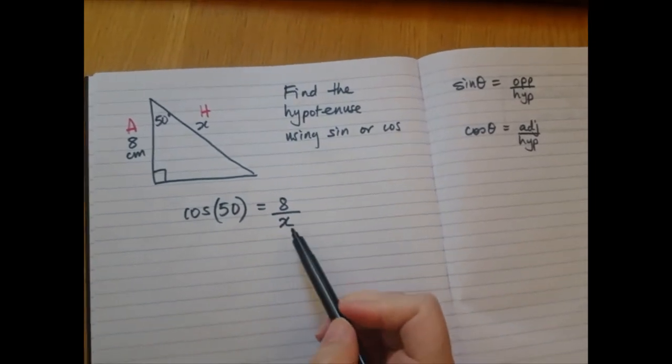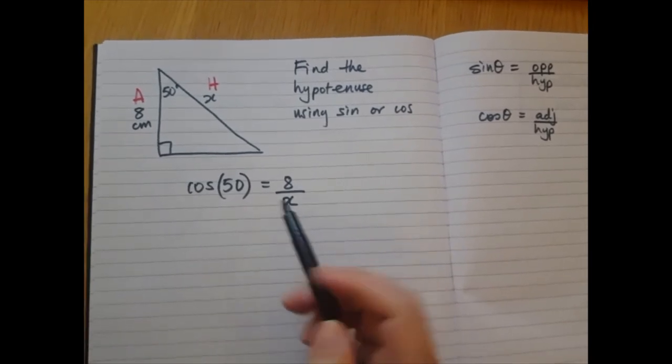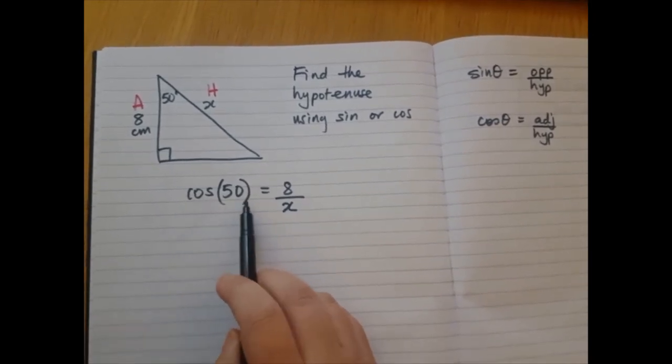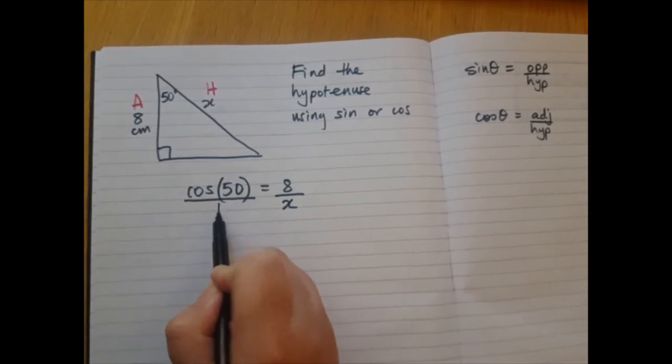So now we want to find x, but it's on the bottom line. So we're going to do the same as we did before. I'm going to change this cos 50 into a fraction. So the fraction will be over 1.